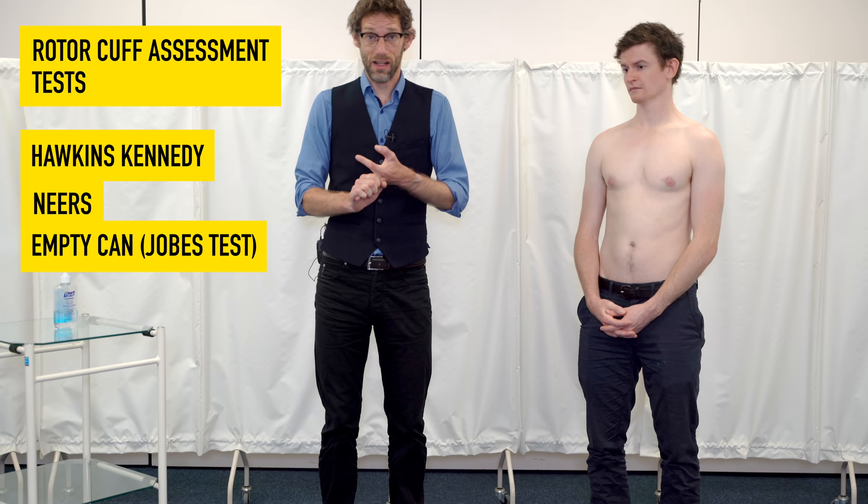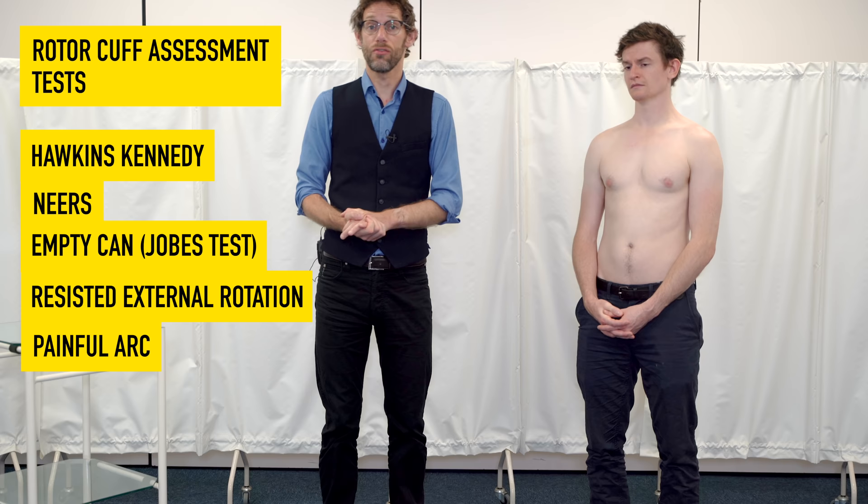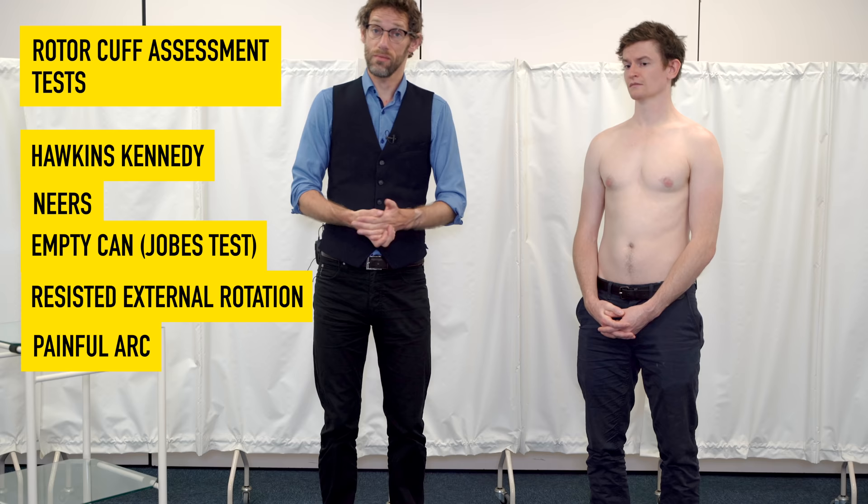Now we need to go on to the special tests, starting with a focus on the rotator cuff. There are at least 70 different tests for the shoulder, and none of them have particularly strong clinical significance on their own. There is some suggestion that a constellation of five tests — Hawkins, Neer's, empty can, forced external rotation, and a painful arc — together can indicate rotator cuff pathology, but each must be viewed on its own merits or weaknesses.